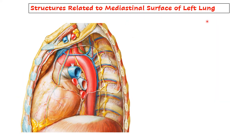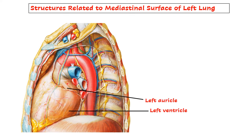Let us look at the structures related to the mediastinal surface of the left lung. The left lung has been removed here. You can see the root of the left lung and the mediastinal structures from the left side. Which structure comes in relation? Here you can see the left ventricle and above that the left auricle. So the left chambers of the heart come in relation to the mediastinal surface of the left lung. Left chambers carry oxygenated blood, which means arteries will come in relation to the left lung, whereas on the right side it is the right chambers and veins.